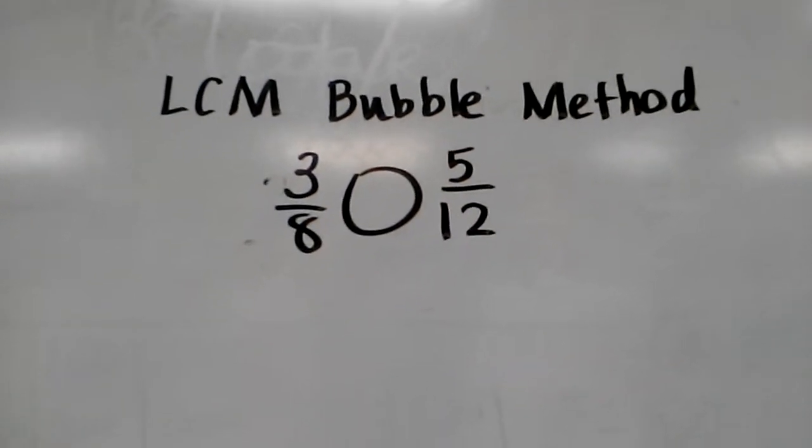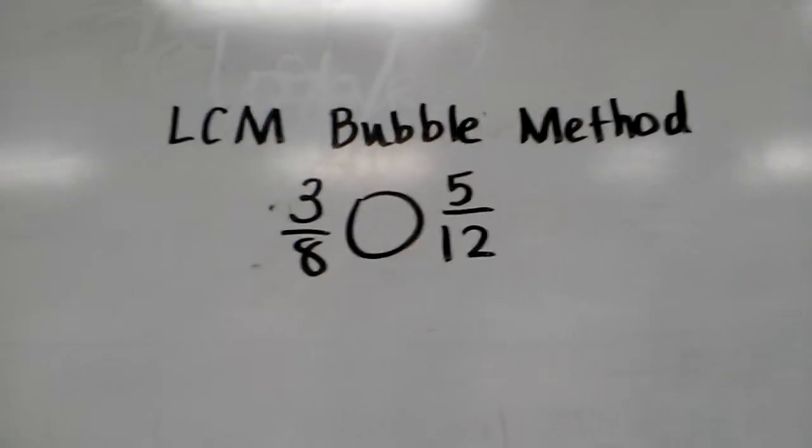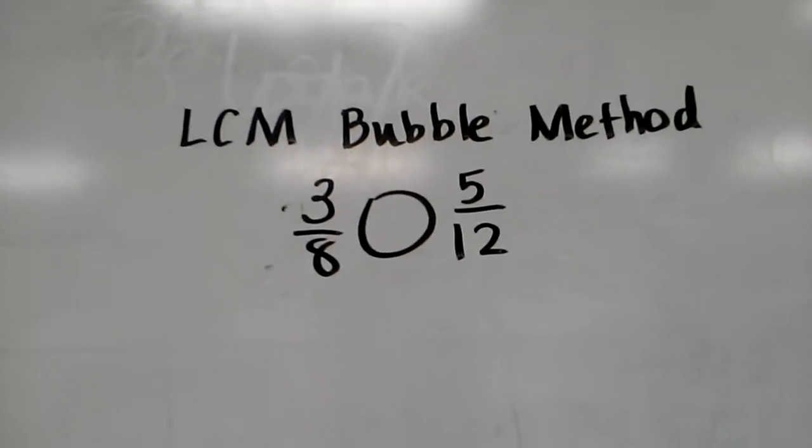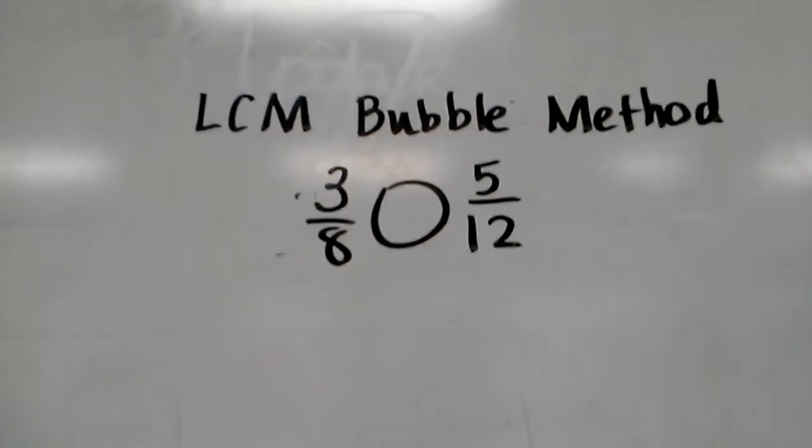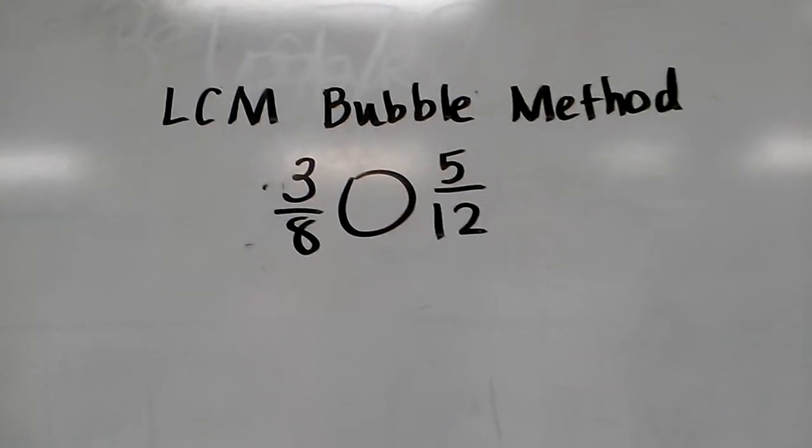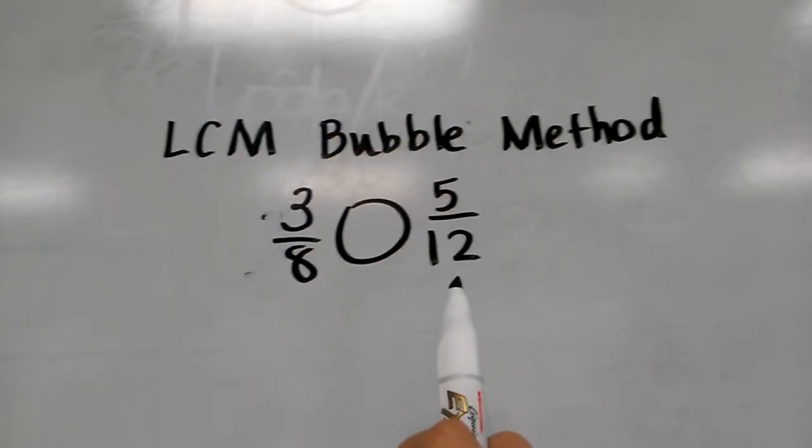Finding the lowest common multiple using the bubble method. The purpose of the bubble method in finding lowest common multiple in this case is to get a common denominator so that we're able to compare 3/8 and 5/12.